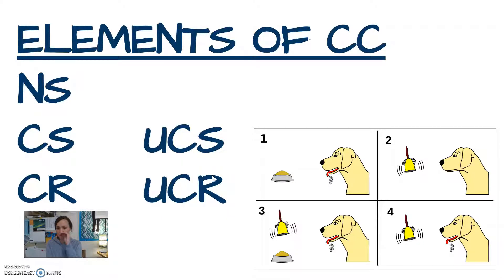Now the CS stands for conditioned stimulus — the object you had to be conditioned to, something you had to learn a response to. The conditioned response is a behavior you had to learn. So the conditioned stimulus is the bell — the object we learn to salivate to — and the conditioned response is salivating to that bell. The dogs' conditioned response is to salivate to the conditioned stimulus, the bell.